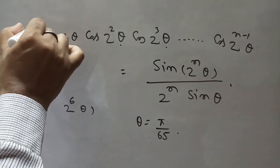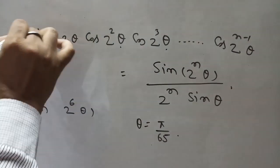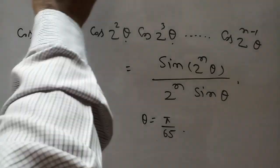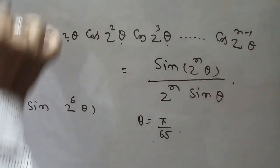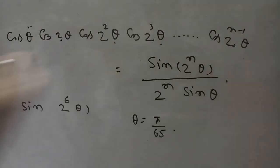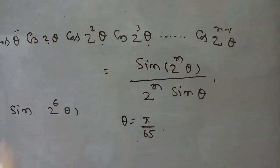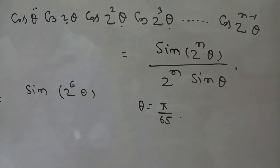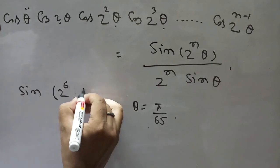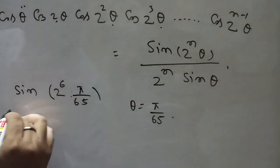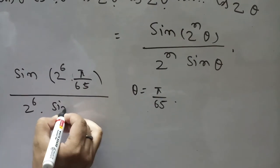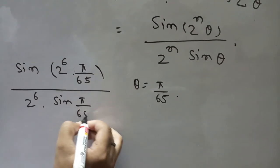So the angle θ = π/65. The angles are multiplied by 2, matching our formula. Applying the formula with n = 6: the answer is sin(2⁶ · π/65) / (2⁶ · sin(π/65)) = sin(64π/65) / (64 · sin(π/65)).